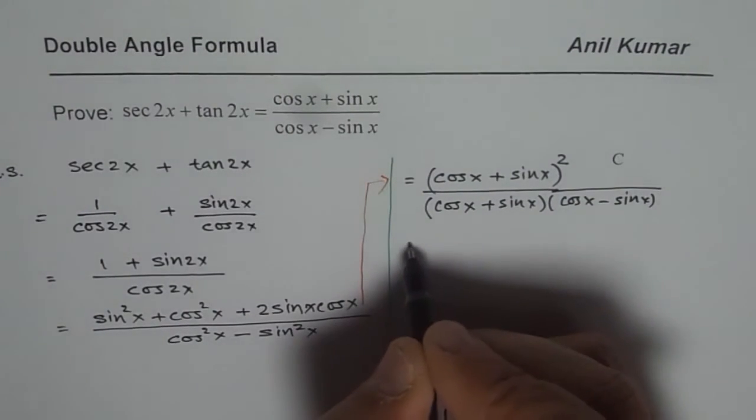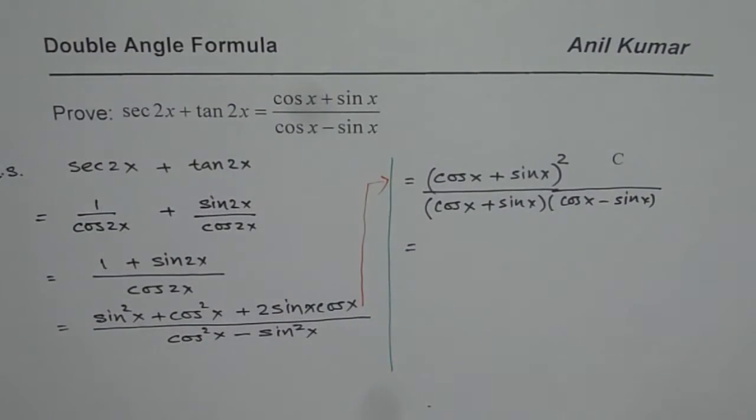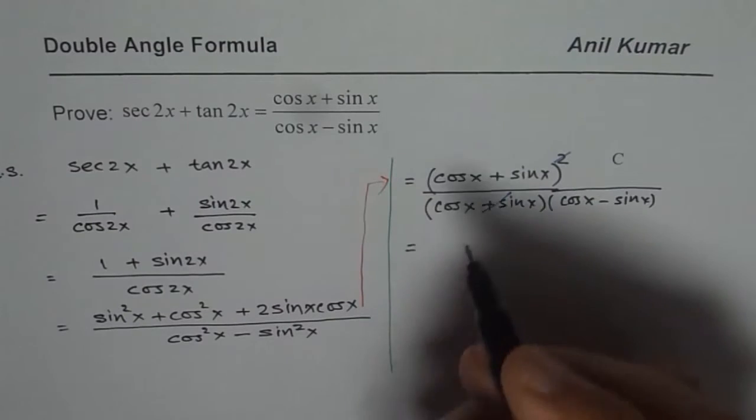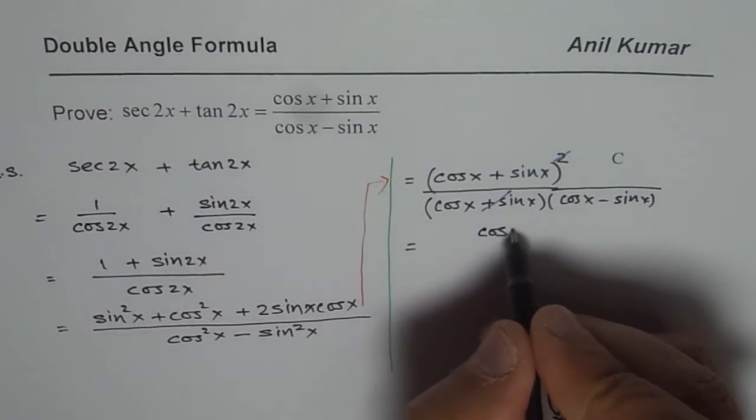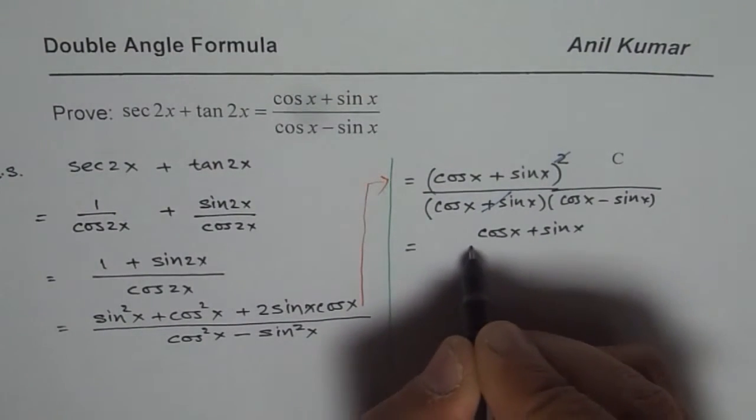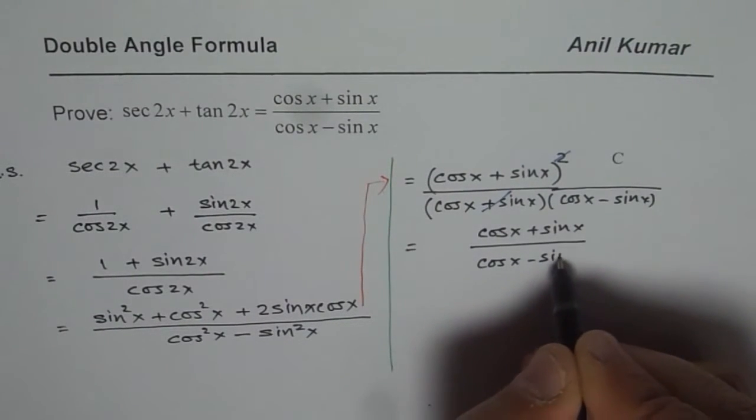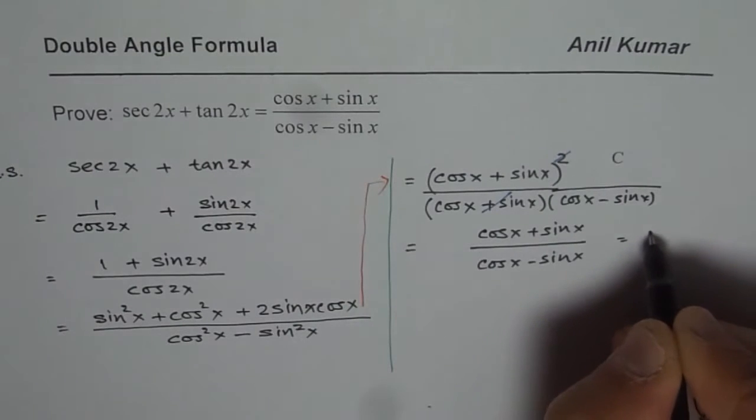Difference of squares. And now I can cancel one of these factors and I get cos x plus sin x divided by cos x minus sin x which is the right side.